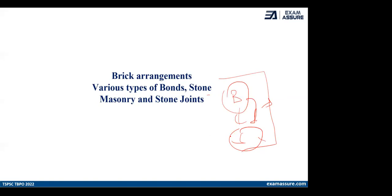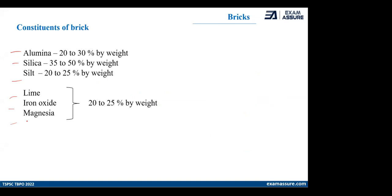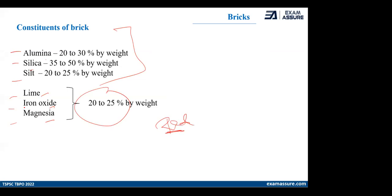Today we are going to discuss brick and stone — basically your masonry units. Now, brick: many times this question was asked about the constituents of brick — what brick is composed of. This is the basic composition of your brick. It has alumina, silica, and silt in major quantities, and lime, iron oxide, and magnesia cover almost one-fourth part of your brick.